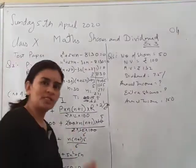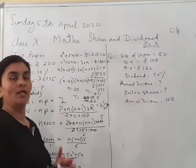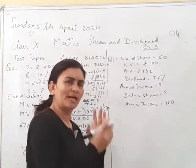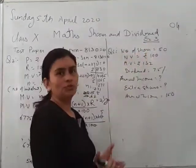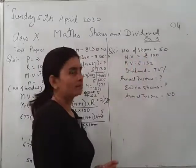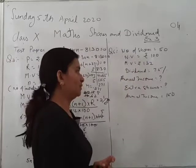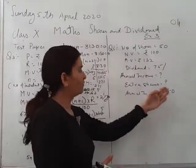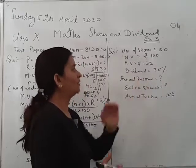Now from the shares and dividend chapter, you asked question number 5. In that question, first read the question properly and write what is given. Number of shares is 50, nominal value is 100, market value is 130, dividend is 7.5%, and annual income given is 150. We have to find out the extra shares and the new annual income.